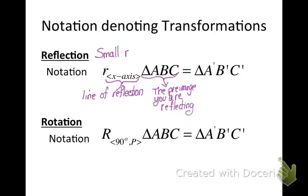Then they will often tell you what it is that you are reflecting. So in this case, my pre-image is triangle ABC, and they might even tell you the name they want you to give to your image. In this case, they want us to name our image A prime, B prime, C prime.